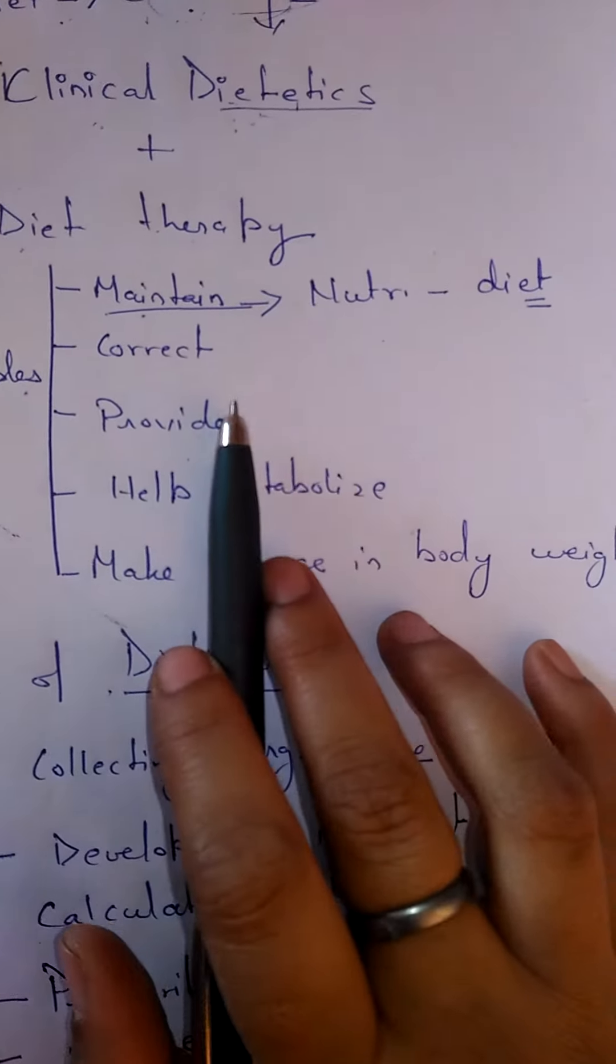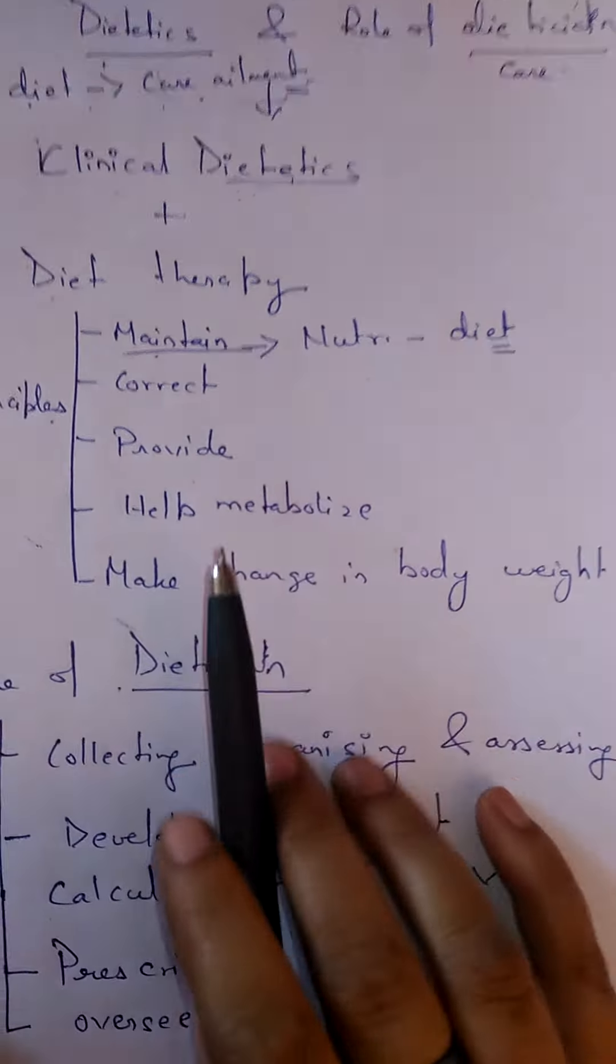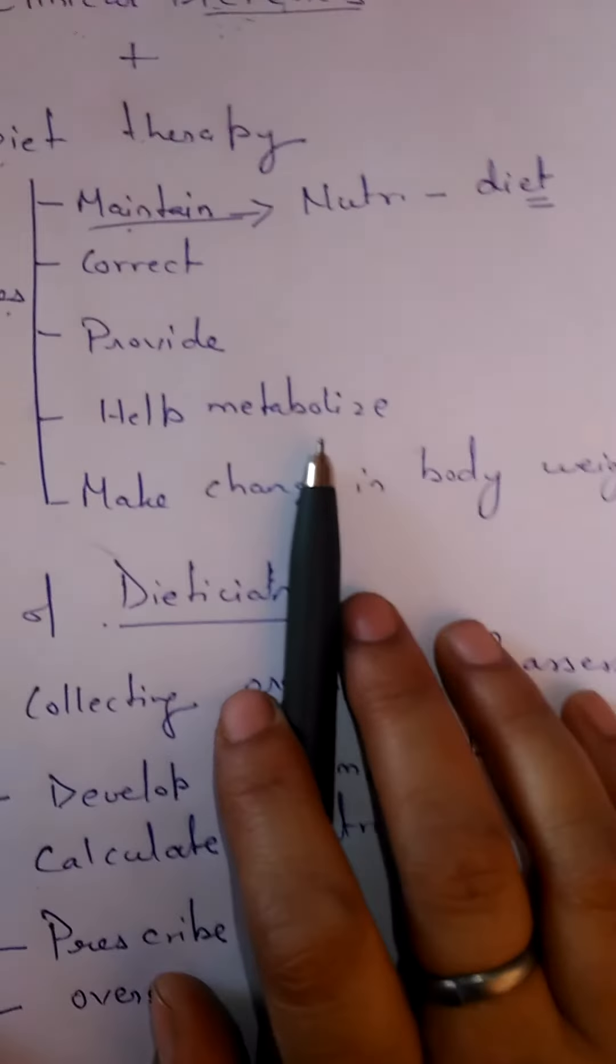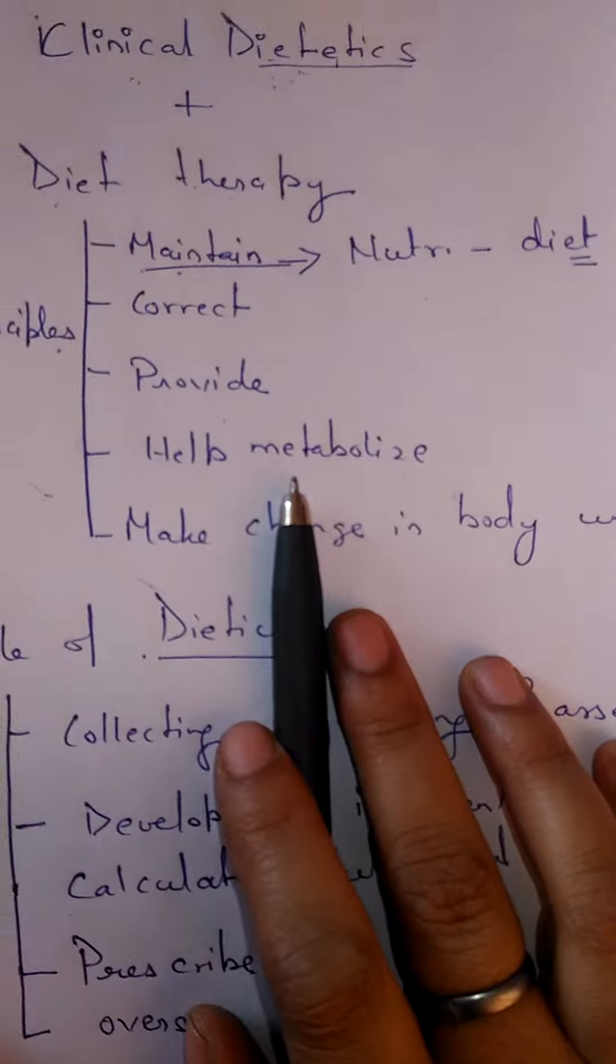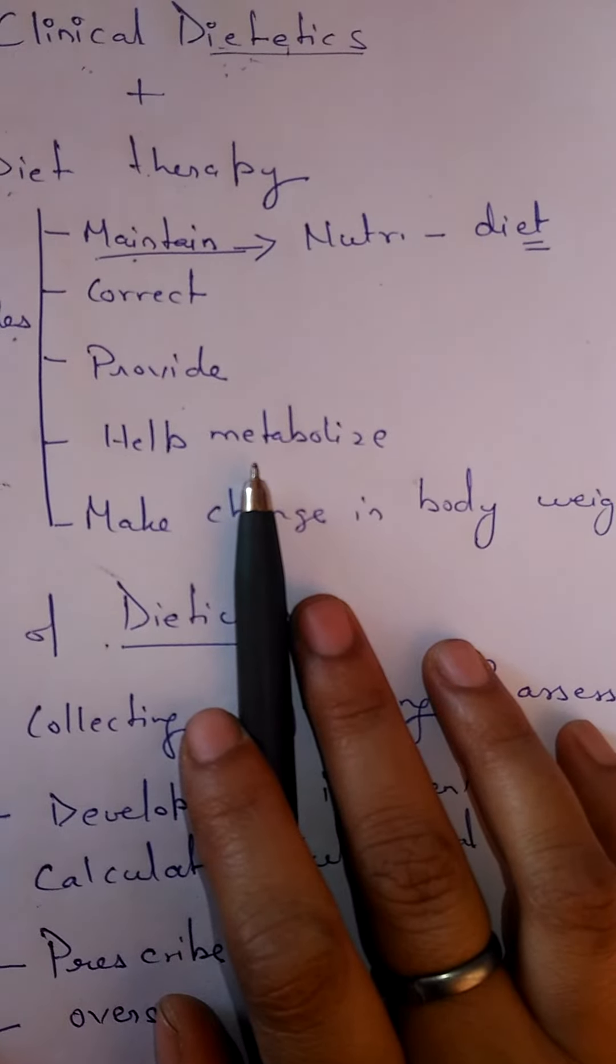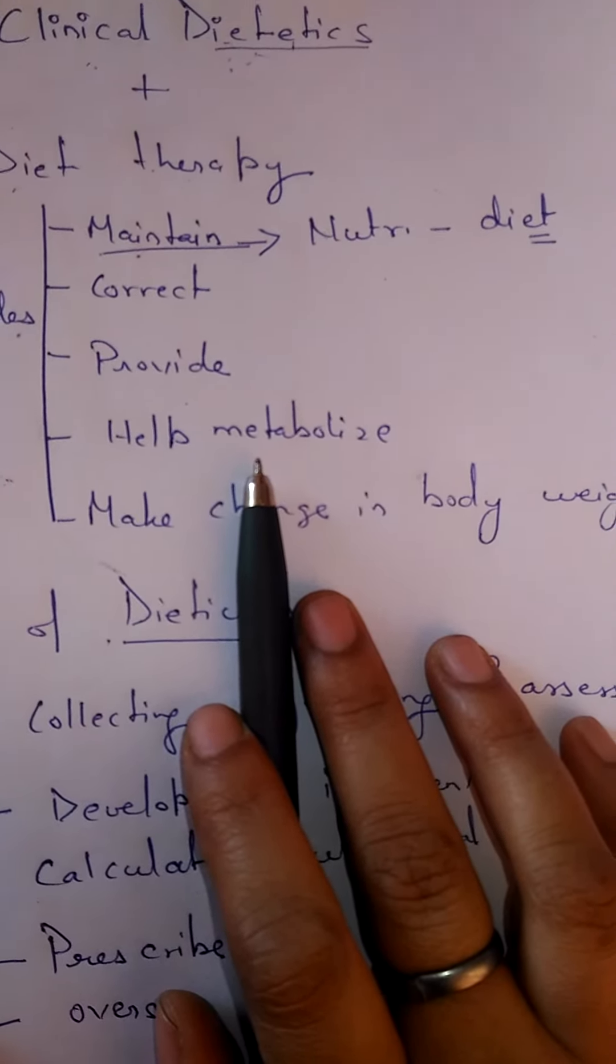The next thing is given help metabolize. Help metabolize means we are taking nutrients, but who is taking the guarantee that the nutrients which are being taken by us are also utilized by our body?